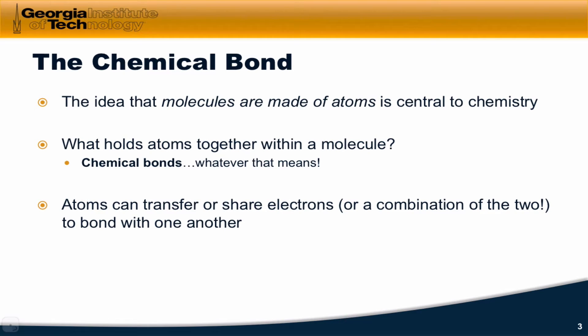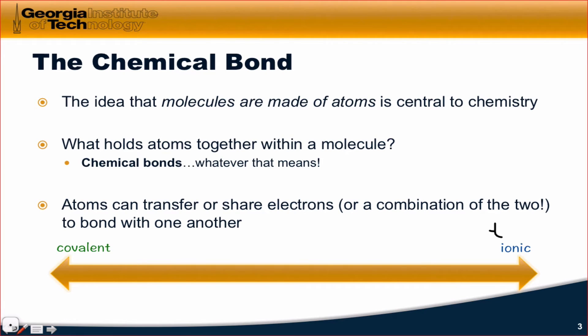Atoms can either transfer or share electrons in order to bond with one another or a combination of the two. The transfer of electrons is generally associated with ionic bonding. And when we say transfer, we mean that a neutral atom gives one or more electrons to another neutral atom to form a pair of ions, a pair of charged particles. And that's where the term ionic comes from. When atoms share electrons, that is they don't completely transfer, but they share a pair of electrons. That's known as a covalent bond.